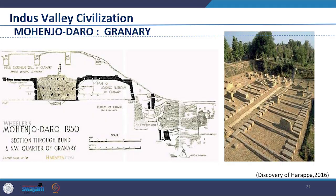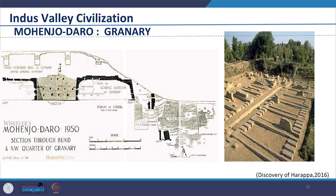We also find the granary — a detailed structure of 50 by 40 meters, 4.5 meters tall, with a mud brick foundation. It had two rows of 6 rooms along a central passageway 7 meters wide, paved with baked bricks. Each room of around 15 by 6 meters had slipper walls with air space between them; a wooden superstructure supported in some places by large columns would have been built on top of the brick foundation, with stairs leading up from the central passage area. Small triangular openings served as air ducts for fresh air beneath hollow floors. The large size of the granary probably indicates a highly developed agricultural civilization.